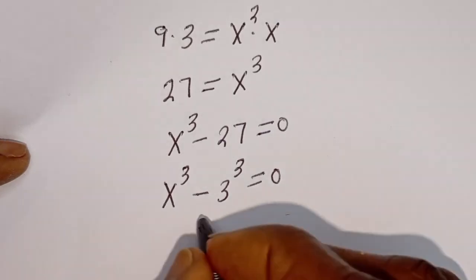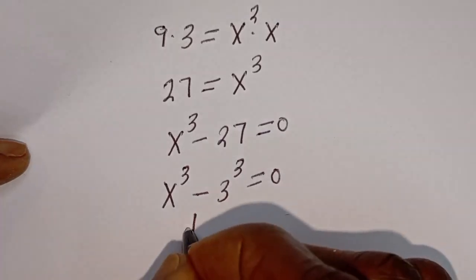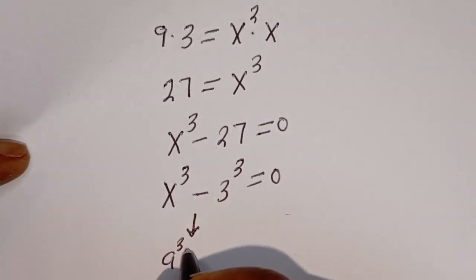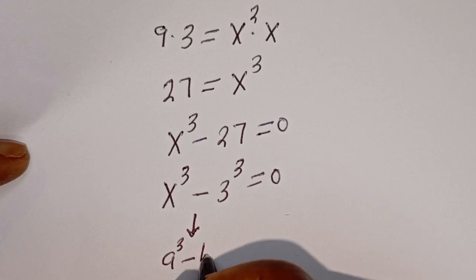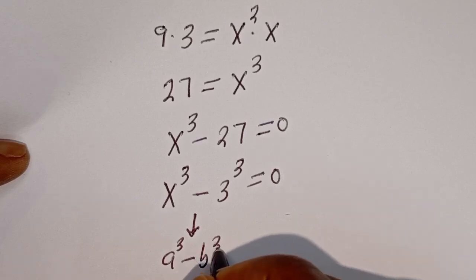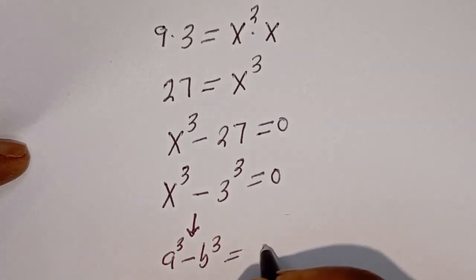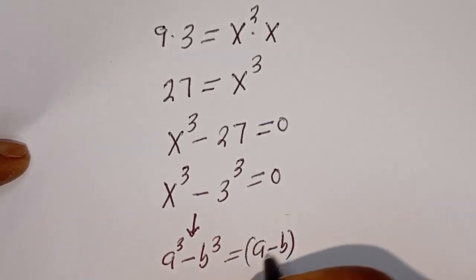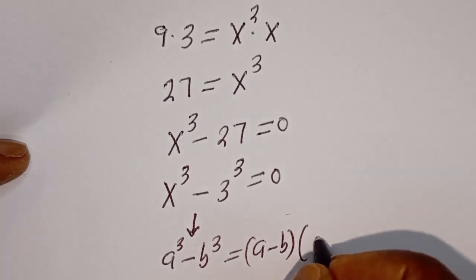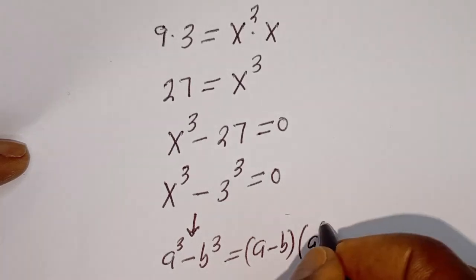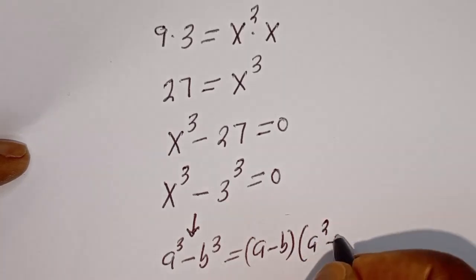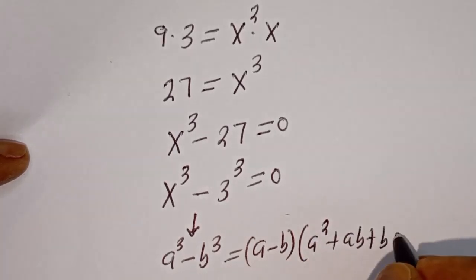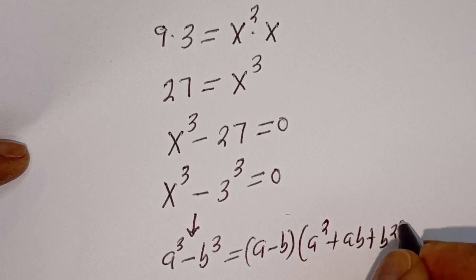Take note of this rule: if you have a to the power of 3 minus b to the power of 3, this is equal to a minus b, bracket a squared plus ab plus b squared.